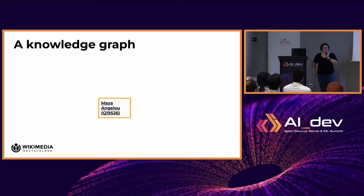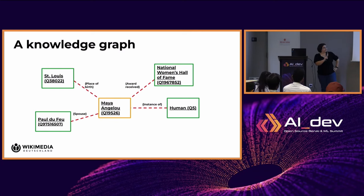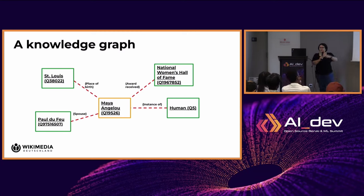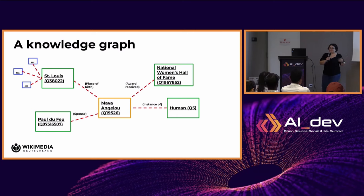Not all of you might be familiar with the concept of a knowledge graph, so here's a short example. Wikidata has an entry for Maya Angelou, and we know a bunch of stuff about her by connecting her to other things — her place of birth was St. Louis, that she's a human, and that she received some award. St. Louis would then be connected to other things, like who is the mayor of St. Louis, how many inhabitants it has, and so on. That builds up a huge graph with general knowledge about the world, like you find in Wikipedia today.